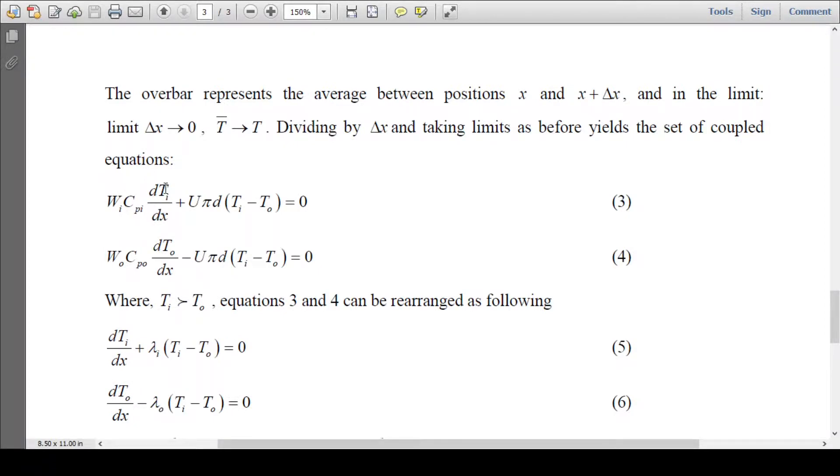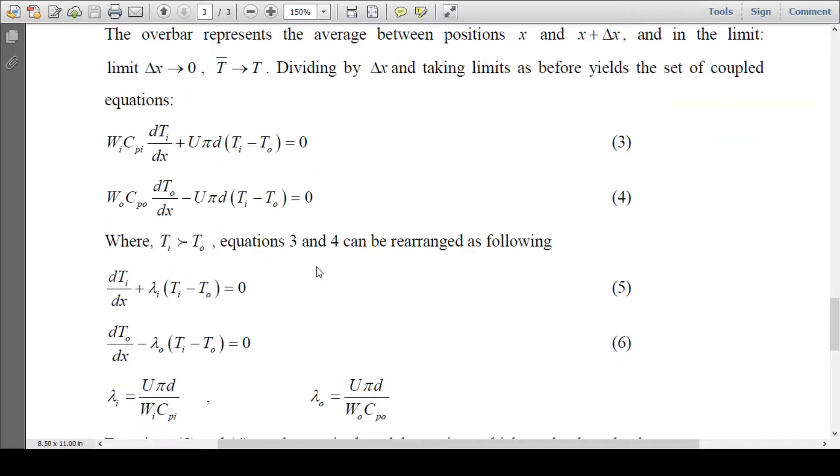WI CPI dTI/dx plus U pi D times (TI minus T0) equals zero. Second equation: W0 CP0 dT0/dx minus U pi D times (TI minus T0) equals zero.